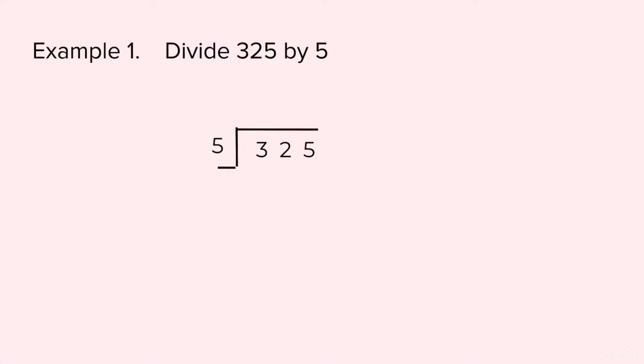Let's take the example: divide 325 by 5. Now till now you used to take one digit and start dividing. But now when you take one digit of the dividend it is smaller than the divisor, so this is the change that we will see how to handle such a problem.